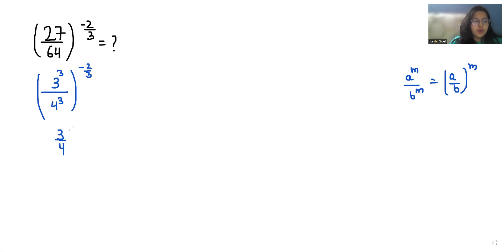So similarly 3 by 4 whole power 3 times negative 2 by 3. So we can cancel out this 3 with 3. So 3 by 4 negative 2.